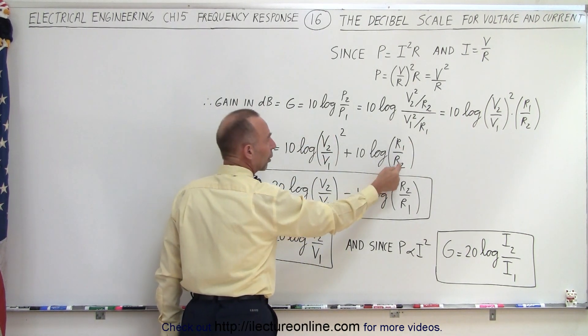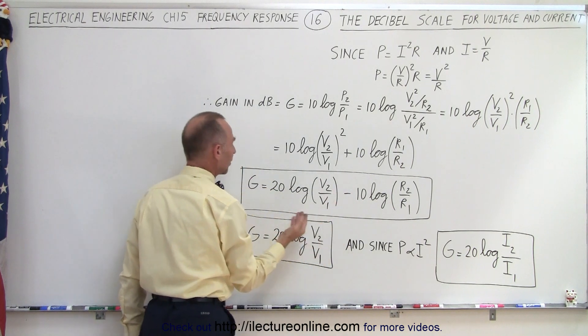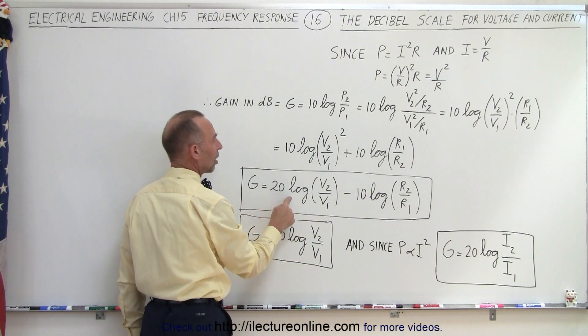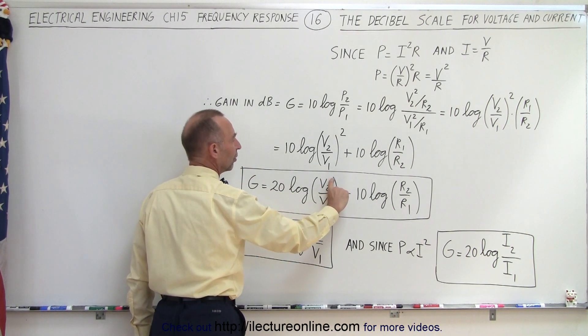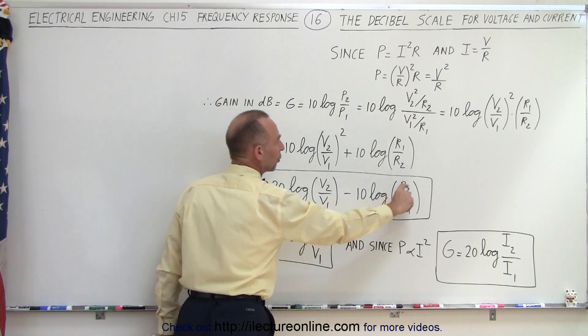And then if we want to get R2 on the top, we change this to a negative, so this then becomes that the gain is 20 times the log of the ratio of the voltages minus 10 times the log of the ratio of the resistance. All we did here is take the exponent and multiply the 10 and make that into a 20.